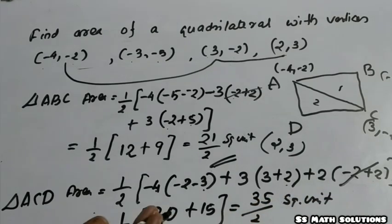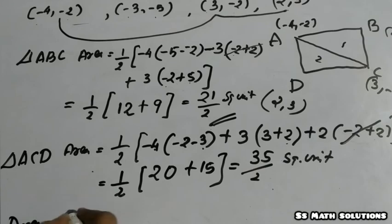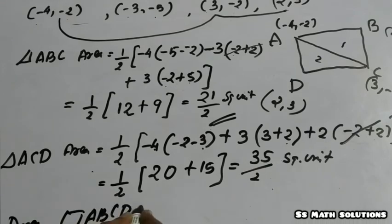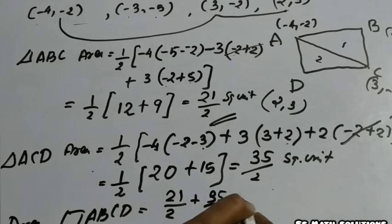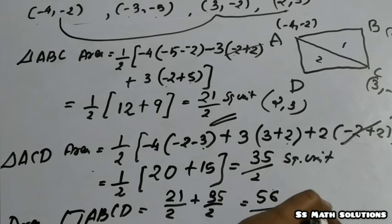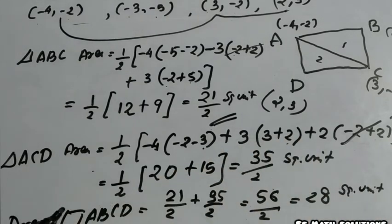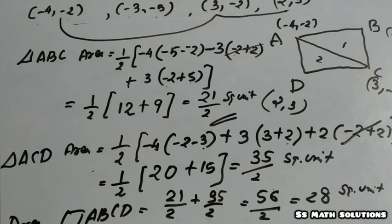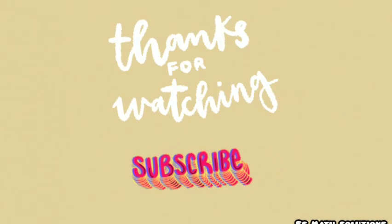We need the area of the quadrilateral. Area of quadrilateral ABCD equals area of triangle ABC plus area of triangle ACD, which is 21/2 + 35/2 = 56/2 = 28 square units. This is the answer. When coordinates only are given, you can use this formula. Hope you cleared today's section. Thank you for watching — please subscribe to my channel for future videos.